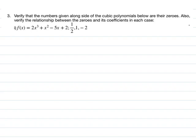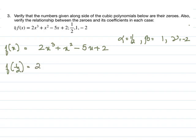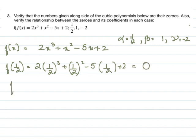We verify that alpha = 1/2, beta = 1, and gamma = -2 are the zeros of f(x) = 2x³ + x² - 5x + 2. To check if 1/2 is a zero, we compute f(1/2) by substituting x = 1/2 and solving. The result is 0, so f(1/2) = 0; therefore 1/2 is a zero of the polynomial.